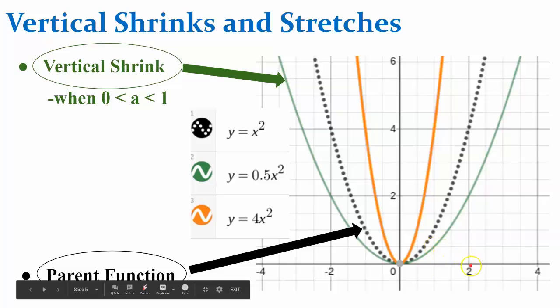Let's look at this 2, 4. Multiply the output 4 by 1 half, and now we have the ordered pair 2, 2. So all outputs are affected by a factor of 1 half, shrinking the function towards the x-axis.